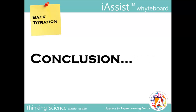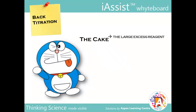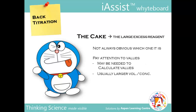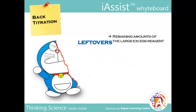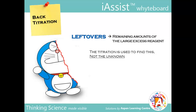To conclude: the whole cake refers to the large excess reagent. Beware that which reagent this is isn't always obvious — pay close attention to the numbers, the concentrations and volumes. For the whole cake, these values will be larger relative to the others. Leftovers refers to what's left of the large excess reagent that is being used in the titration. Keep in mind that the titration is used to find this, and not the unknown.